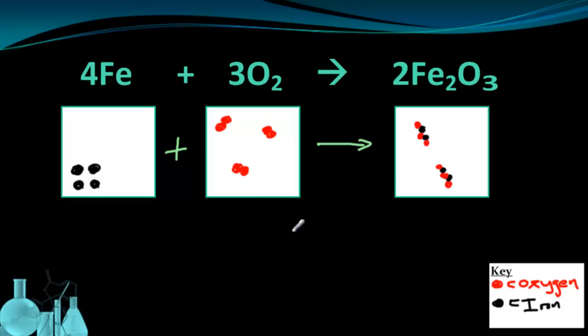The next thing I want you to do now that we have our particle diagram is to count up the number of irons and oxygens in the reactant side versus the product side. So go ahead and count up the number of iron atoms and the number of oxygen atoms.